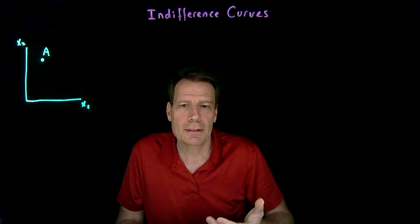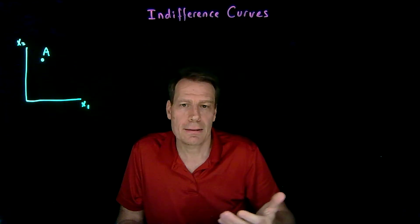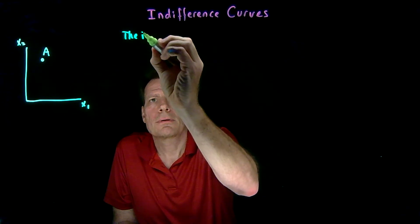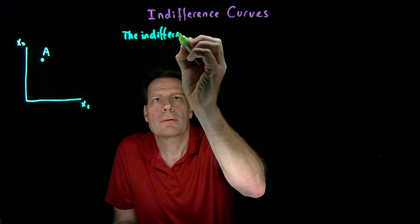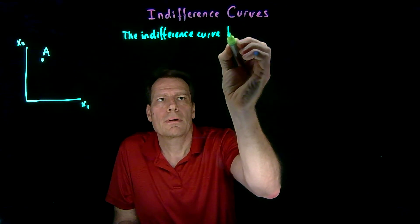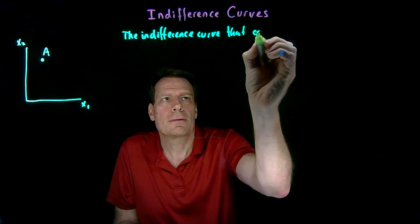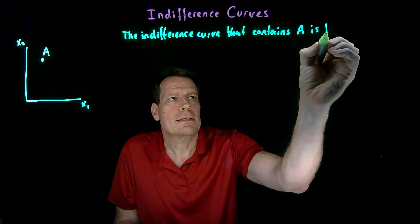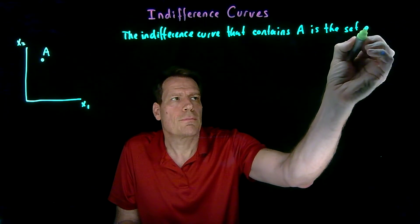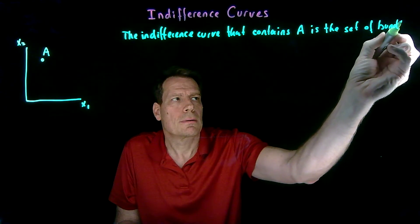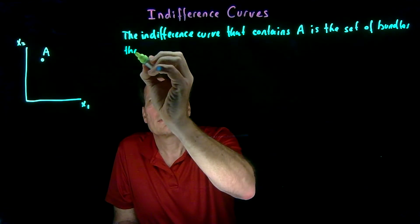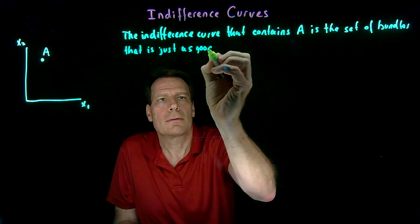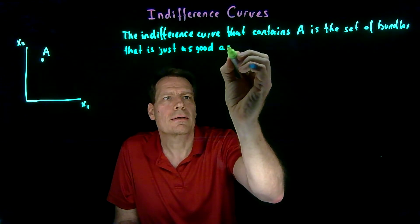In other words, the set of bundles that makes you indifferent between A and those bundles. The indifference curve that contains bundle A is the set of bundles that is just as good for the consumer we're modeling as the bundle A.